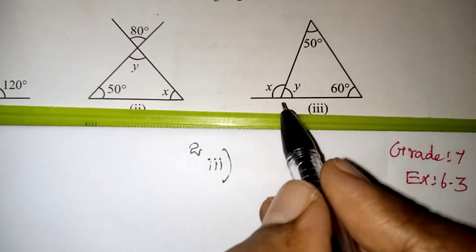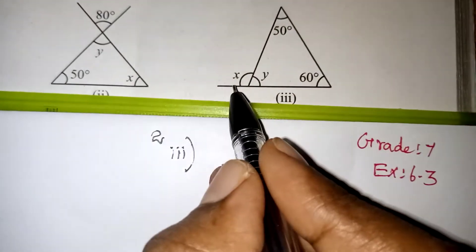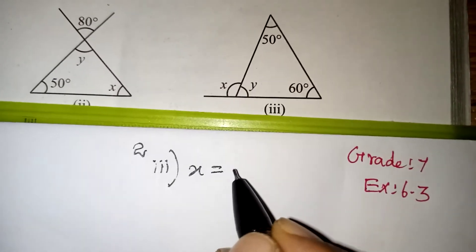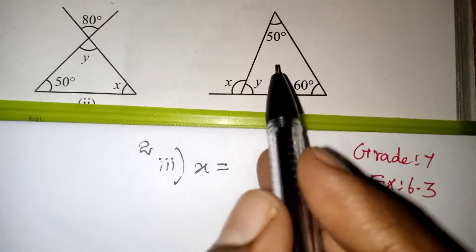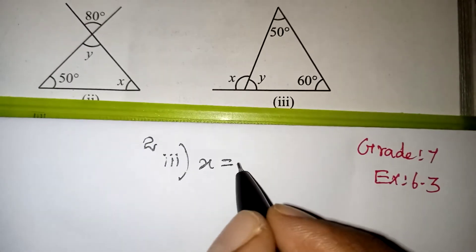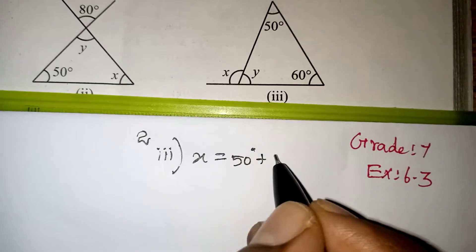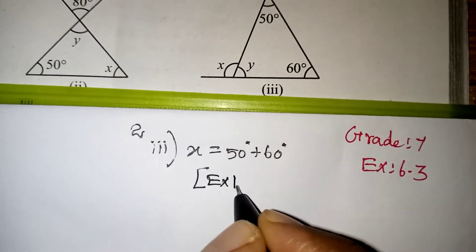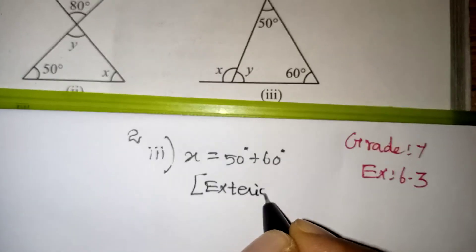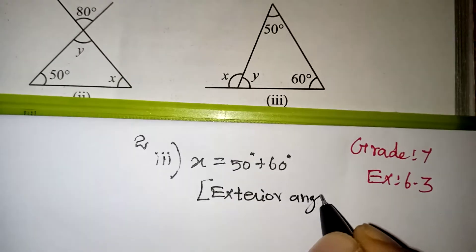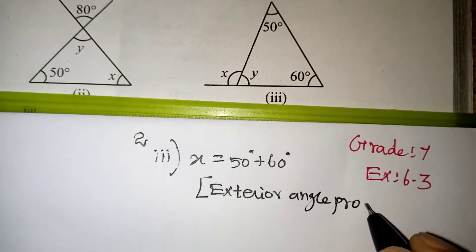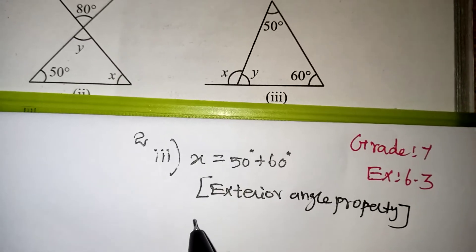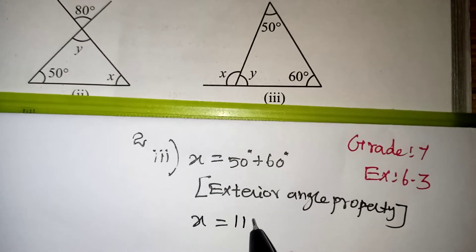By looking at the diagram, x is the exterior angle. We know that the exterior angle is always equal to the sum of two interior opposite angles. The opposite angles are 50 and 60. So, 50 degree plus 60 degree — this comes under the exterior angle property. x is equal to 50 plus 60, which is 110 degree.